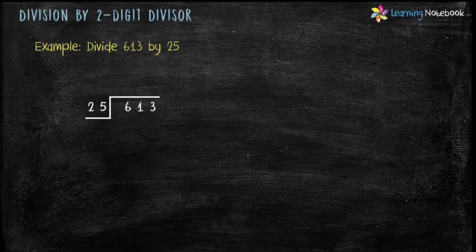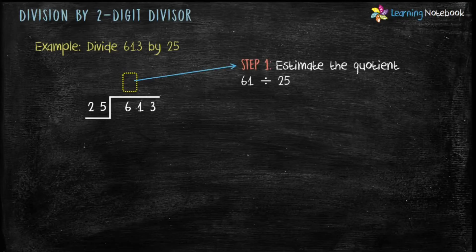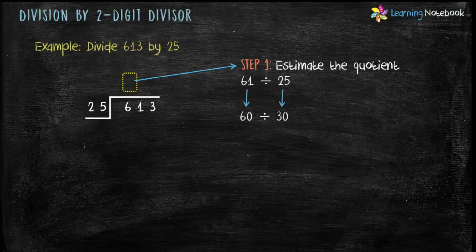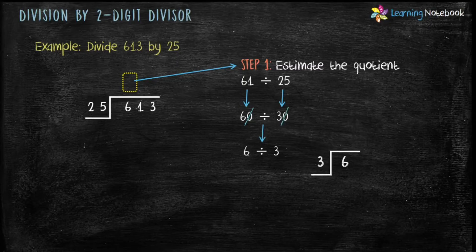Form a tent and put the dividend inside the tent and the divisor outside the tent. In this question, first we have to divide 61 by 25. The question is: which number should we multiply by 25 to get the nearest multiple to 61? We will do 2 steps. Step 1 — estimate the question: round off the numbers. 61 is rounded off to 60 and 25 is rounded off to 30. Cancel 0 by 0 and we get 6 divided by 3. On dividing we get 2 as the estimated quotient.